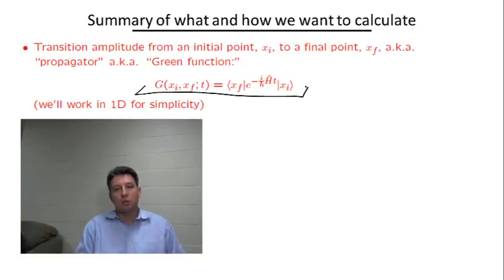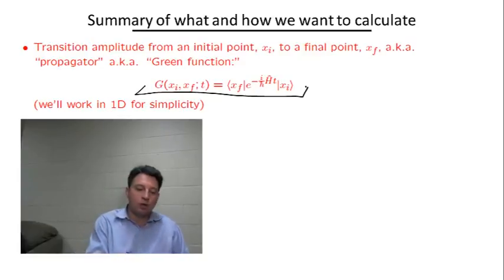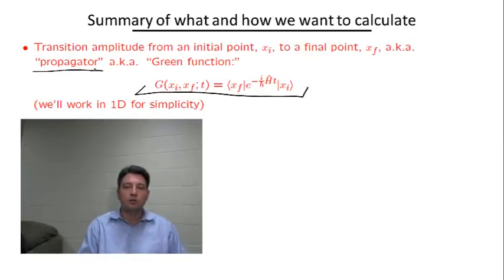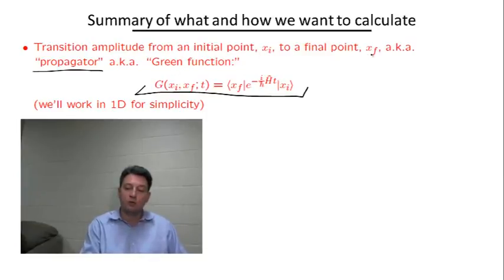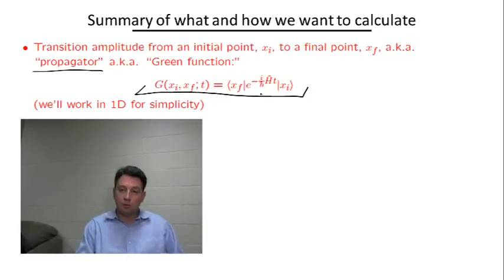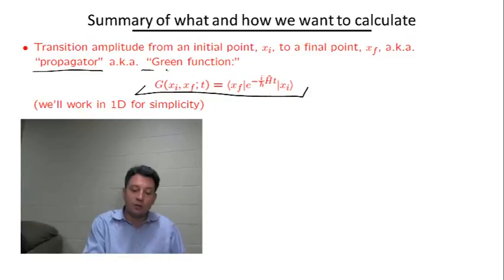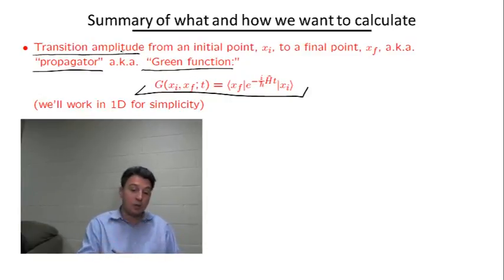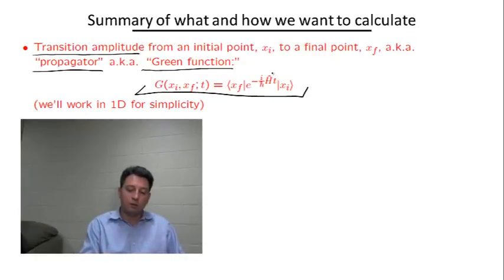The second comment is that what we call the propagator also appears in the literature under the name of transition amplitude — from an initial point x_i to the final point x_f in this case. A very closely related object is also called the Green's function. So if you see these expressions in the literature, they may be closely related to one another and all refer to this object essentially.